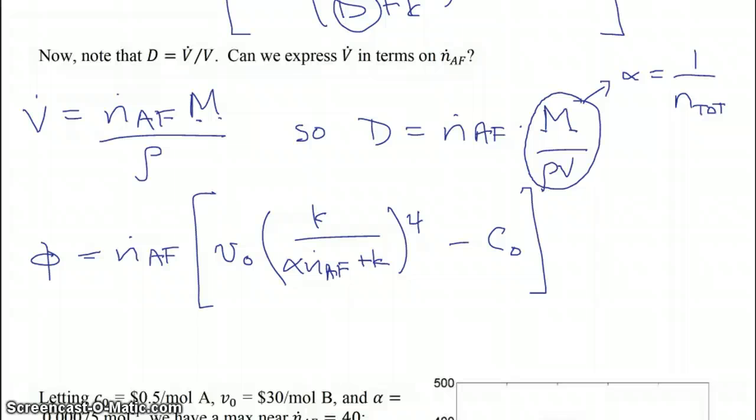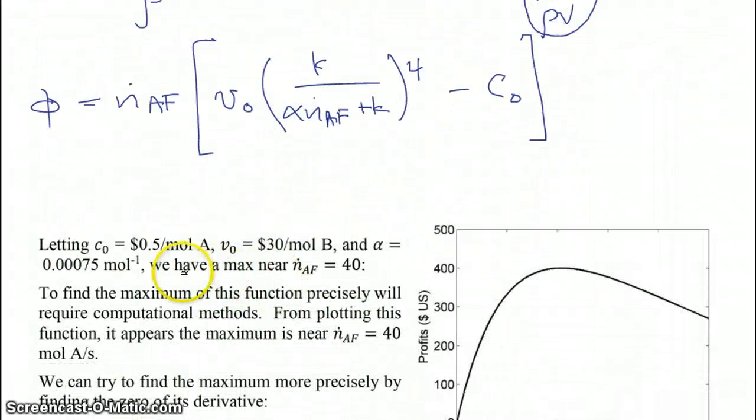So in this example, what we're going to do is we're going to go ahead and let C0 equal 50 cents per mole of A. That'll be the cost for buying it. The value of selling our product is $30 per mole of B. So that's a great conversion there. And alpha is going to be this parameter equal to 0.00075 per mole.